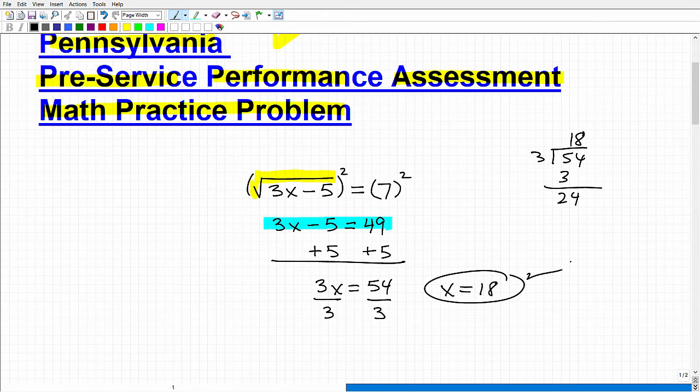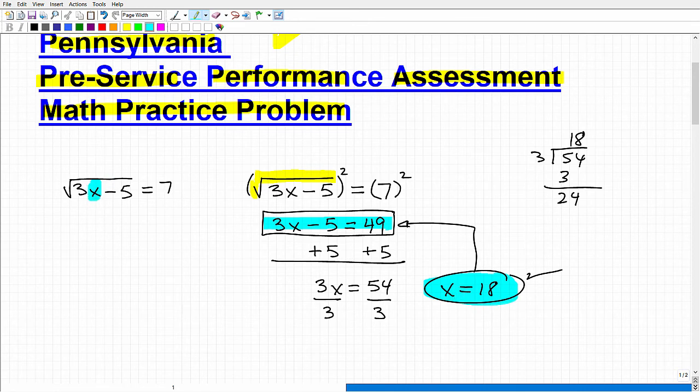Okay, so that is our solution. However, it's the solution to this equation. This equation here. It may or may not be the solution to our original equation, which was the square root of 3x minus 5 is equal to 7. Now again, what we have to do is plug in this answer into the original equation just to check to see if this is going to create a true statement. So let's go ahead and do that now.